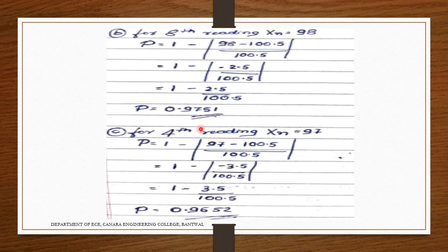For the 4th reading, x_n = 97. Precision: p = 1 minus |97 minus 100.5| / 100.5 = 1 minus 3.5/100.5 = (100.5 minus 3.5)/100.5 = 97/100.5 = 0.9652. This means 96.52% precision.